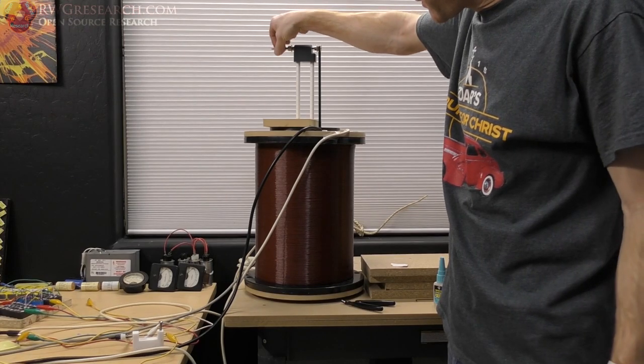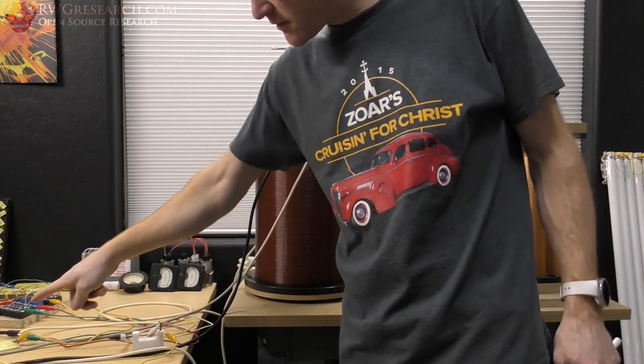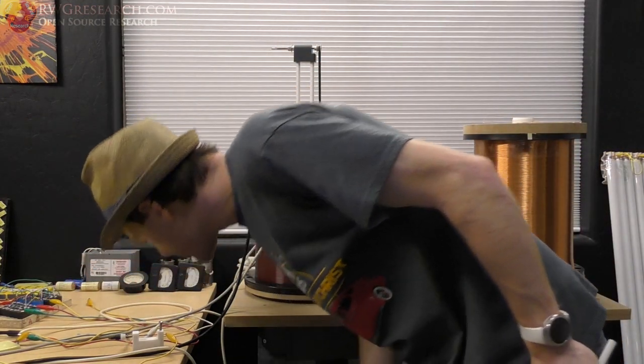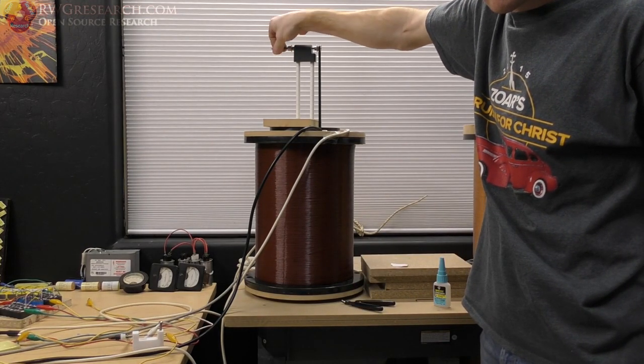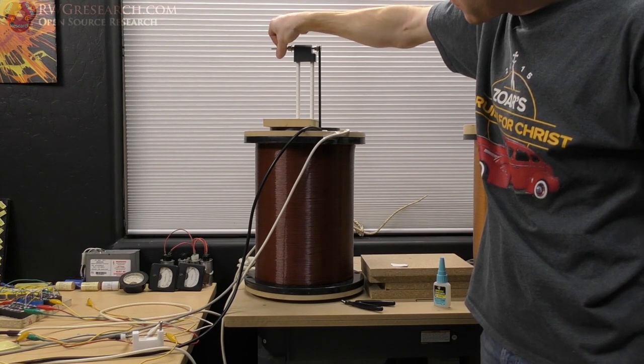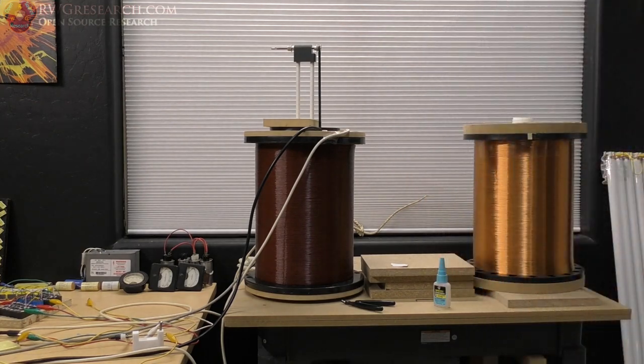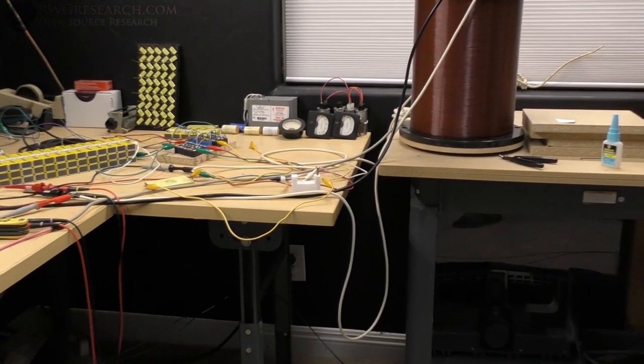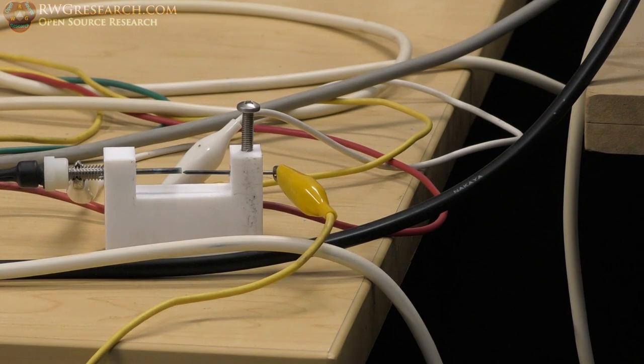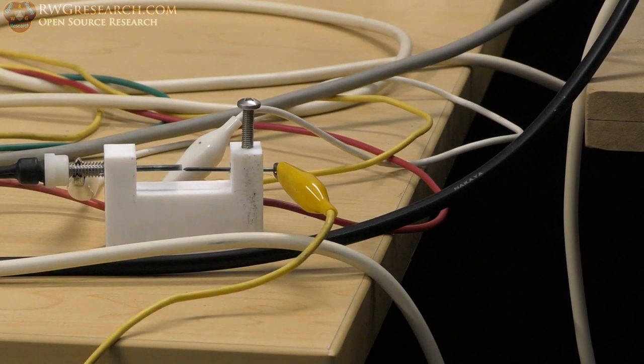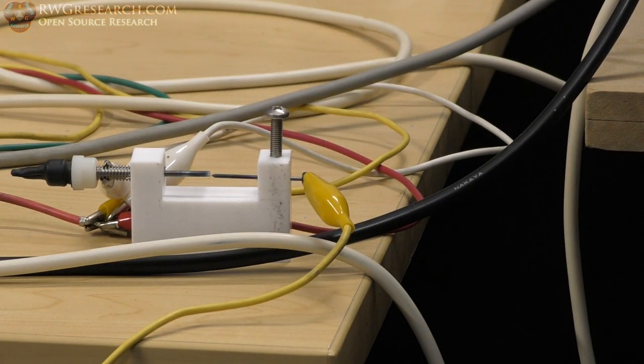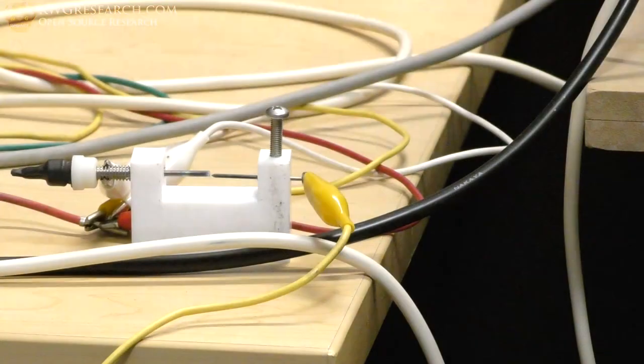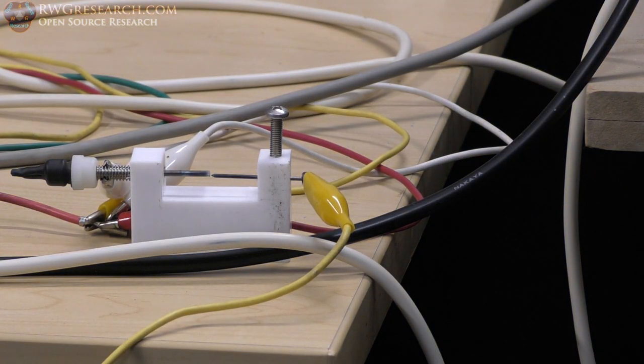There's a spark gap right here connected to this 2,000 volt capacitor. The gap is about a 16th of an inch. I'm not spinning it very fast and it's completely jumping that arc. That's a pretty big gap. I'll turn the lights off so you can see it better.